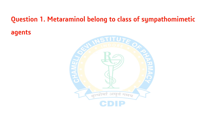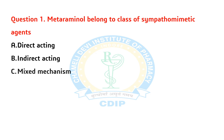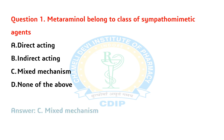Question 1. Metaraminol belongs to which class of sympathomimetic agent? A) Direct acting. B) Indirect acting. C) Mixed mechanism. D) None of the above. Answer: C. Mixed mechanism.